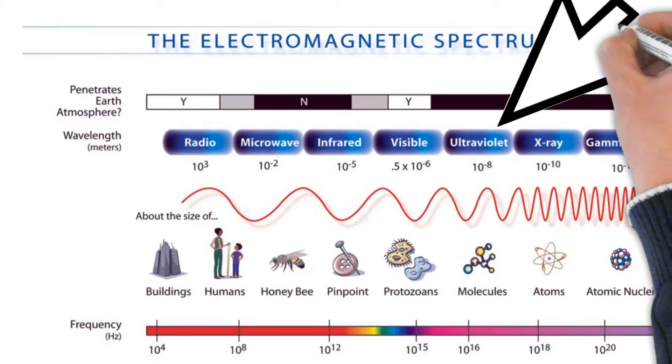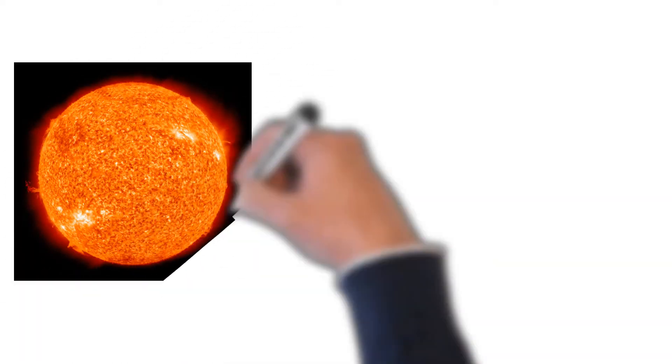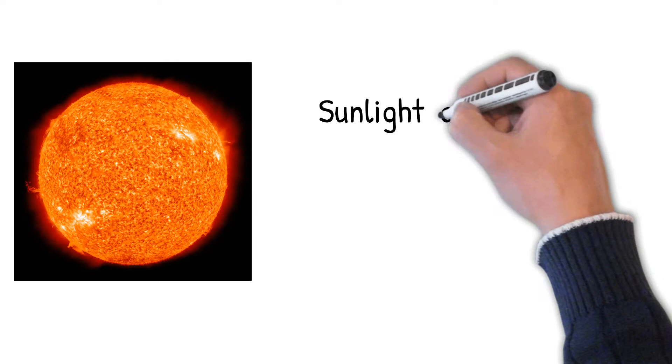Ultraviolet means beyond violet. Violet color has the highest frequencies of visible light. Ultraviolet has a higher frequency and thus a shorter wavelength than violet light. Very hot objects emit UV radiation. Extremely hot stars emit proportionally more UV radiation than the sun.